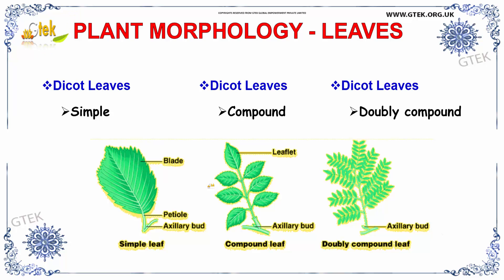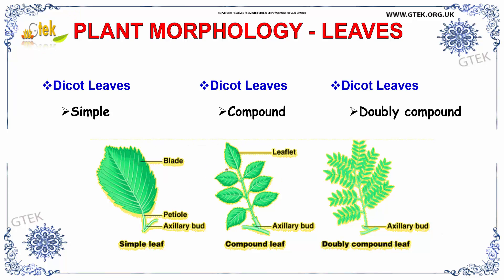The dicot leaves are classified into three types. The first one is simple dicot leaves, you can see it over here. And compound dicot leaves. And the other one is doubly compound dicot leaves. You can see the differences of leaves here.